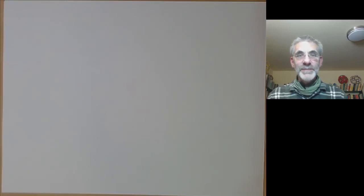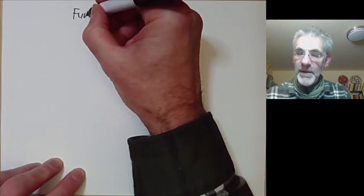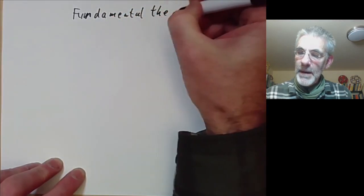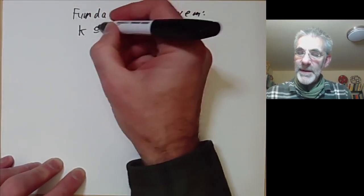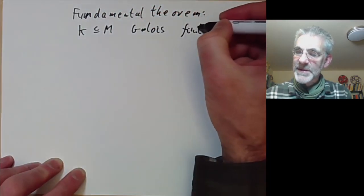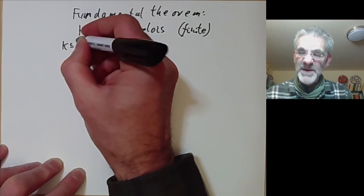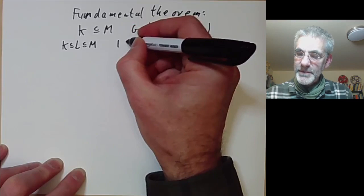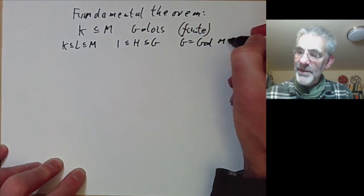This lecture is part of an online course on Galois theory and we will be proving the fundamental theorem of Galois theory. So let's just recall what this says. It says that if K contained in M is a Galois extension — we're going to assume as usual that these extensions are finite — then there's a one-to-one correspondence between intermediate fields L and subgroups of the Galois group. So G is just the Galois group of M over K.